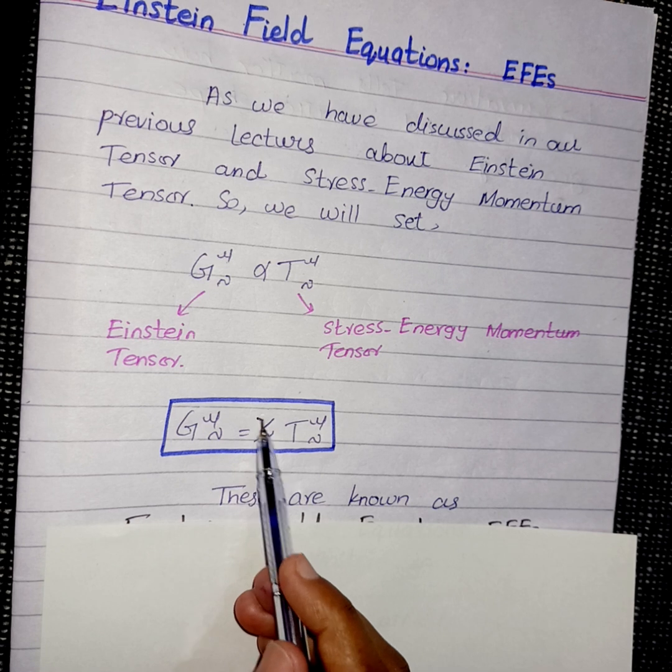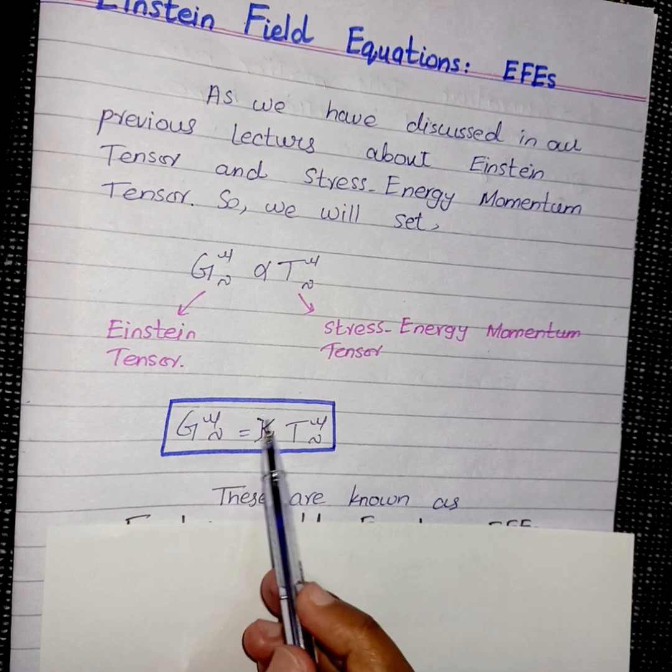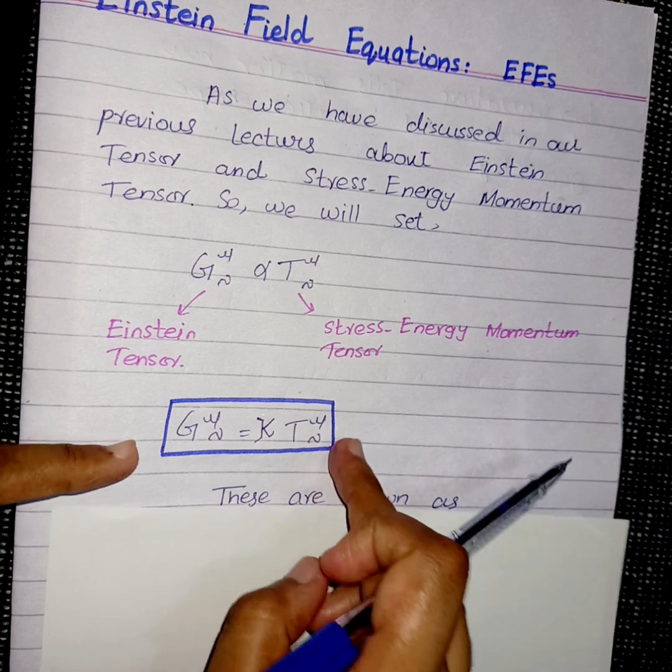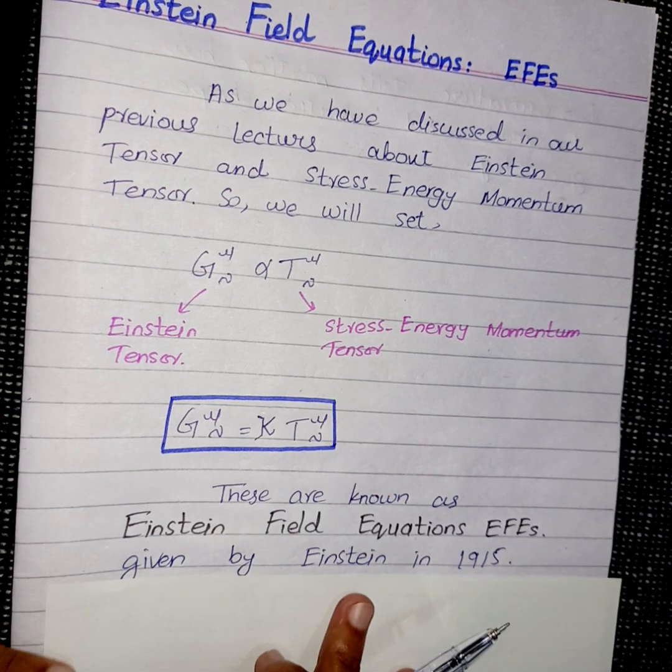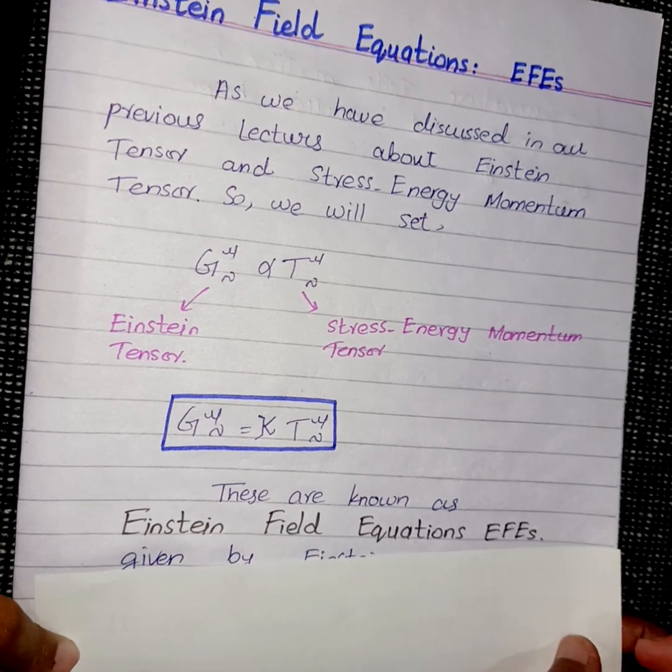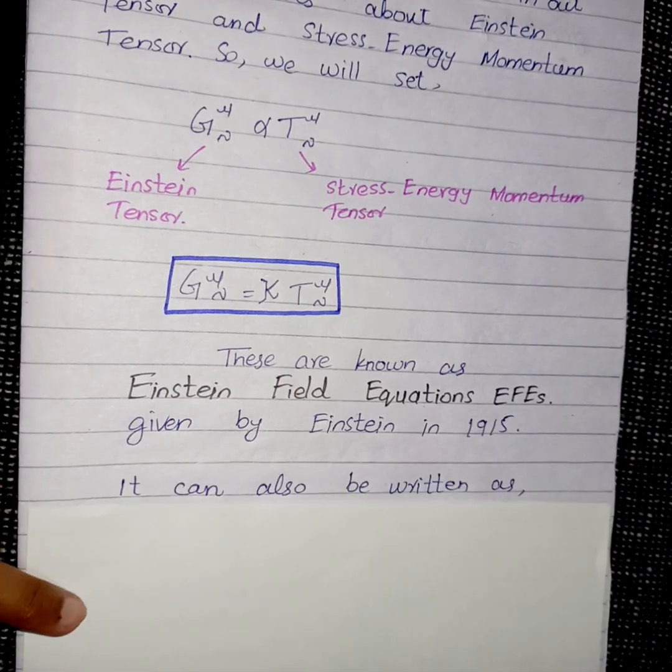You can say kappa, so G_μν equals kappa times T_μν. And actually, this is the main equation. These are known as Einstein field equations, given by Einstein in 1915.